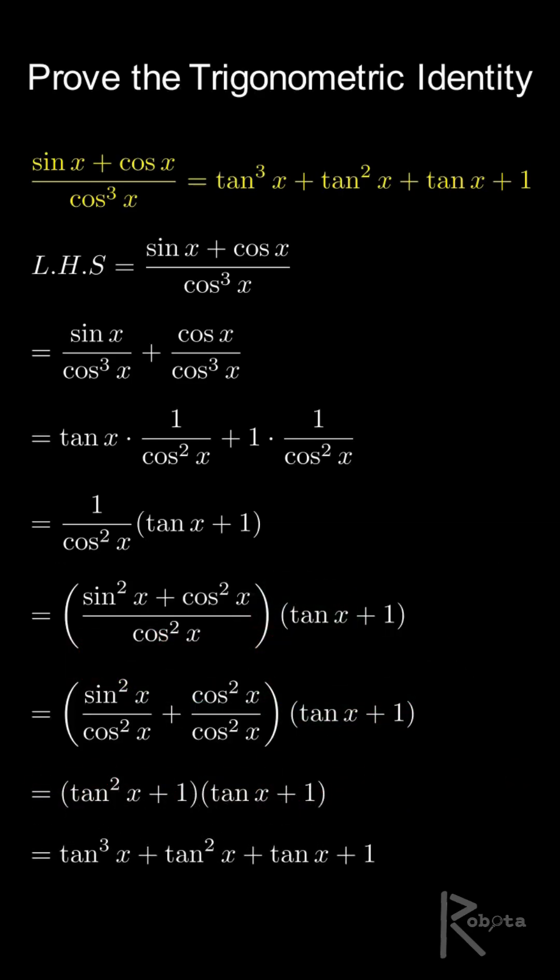Putting it all together, we get tan cubed x plus tan squared x plus tan x plus 1, which matches the right-hand side. Therefore, the identity is proven.